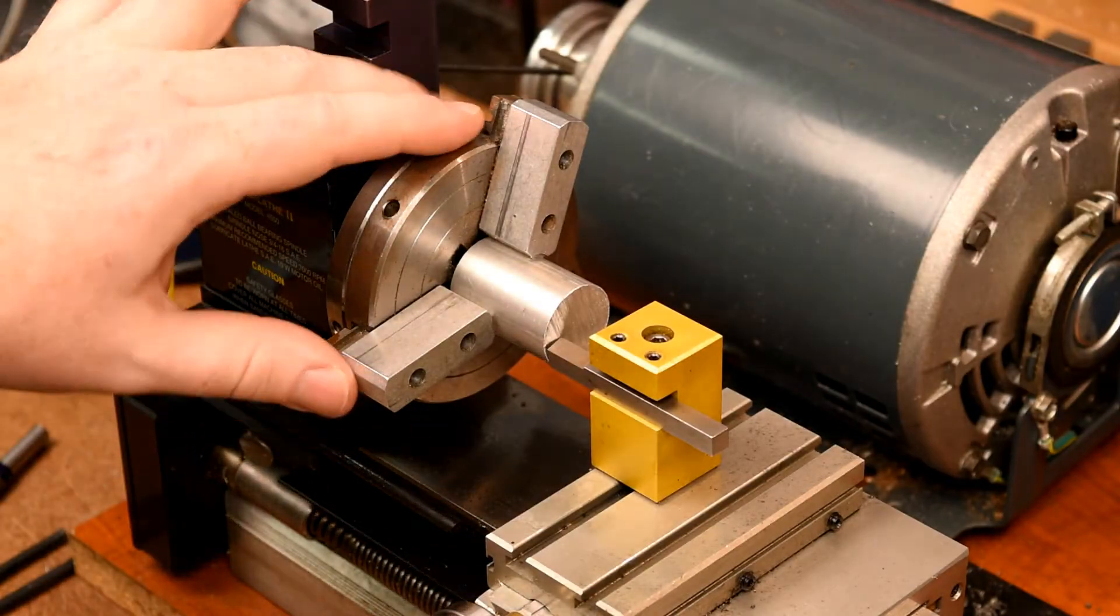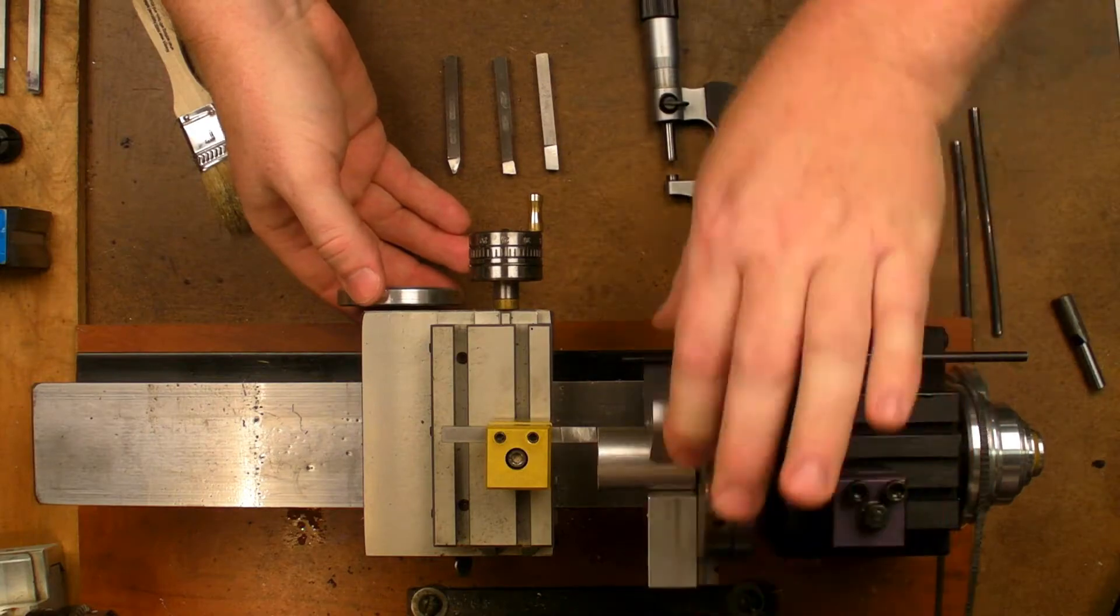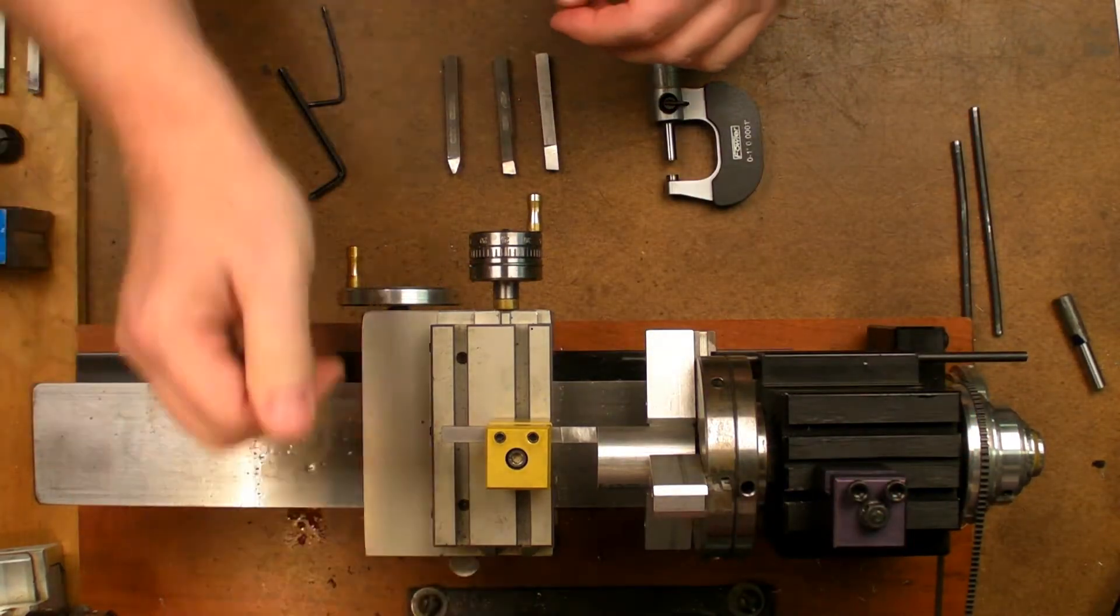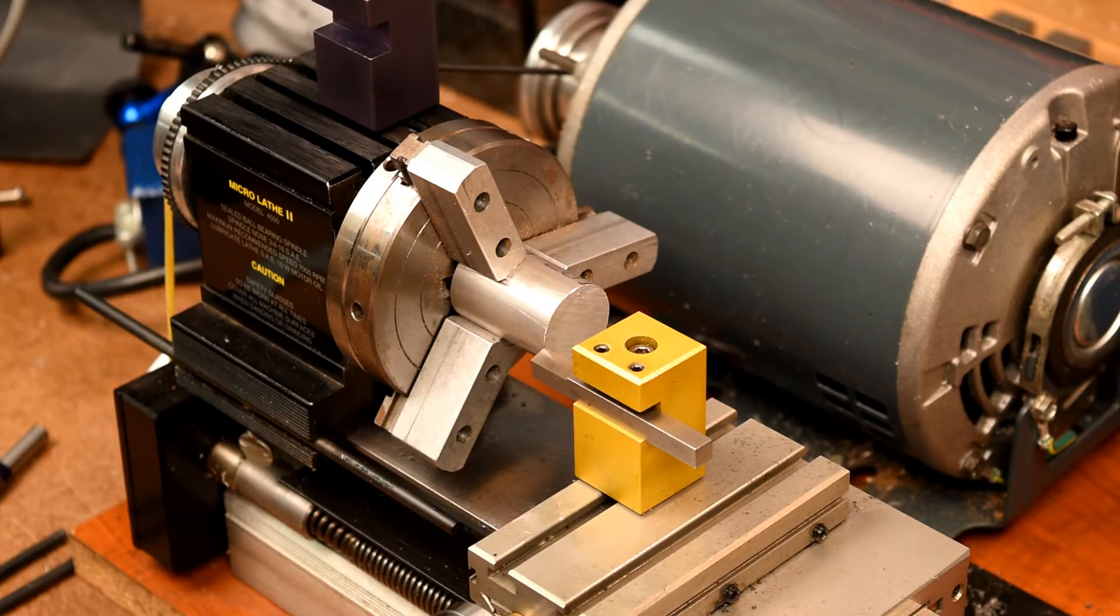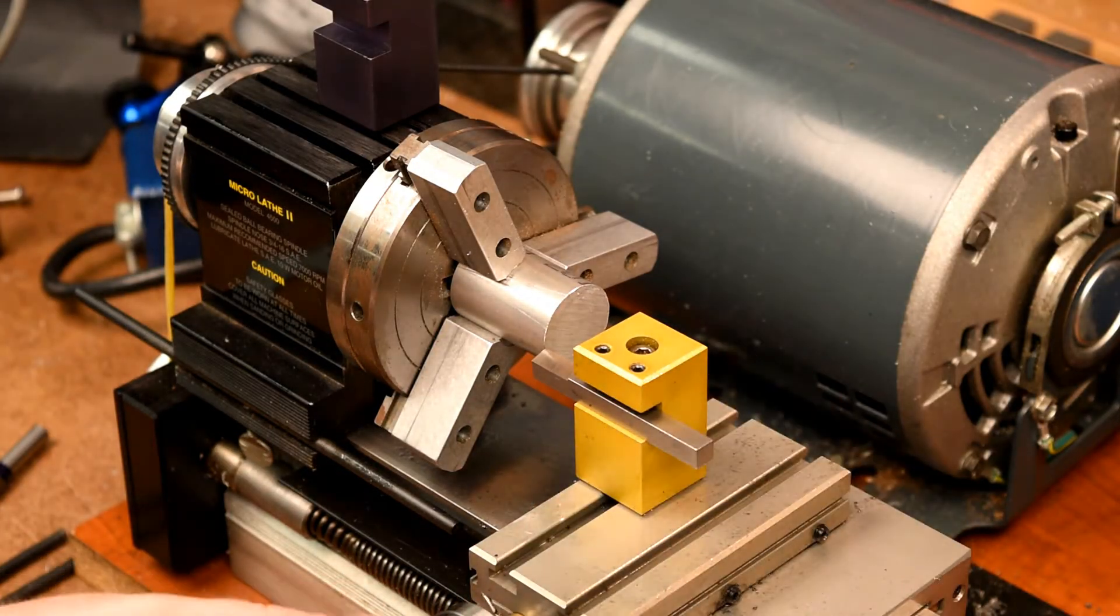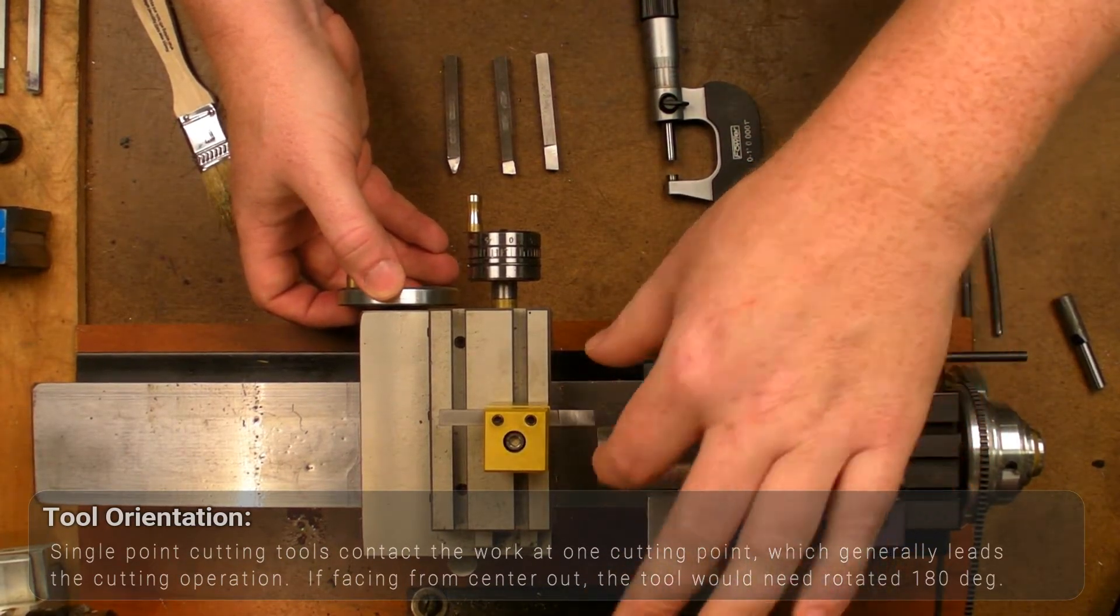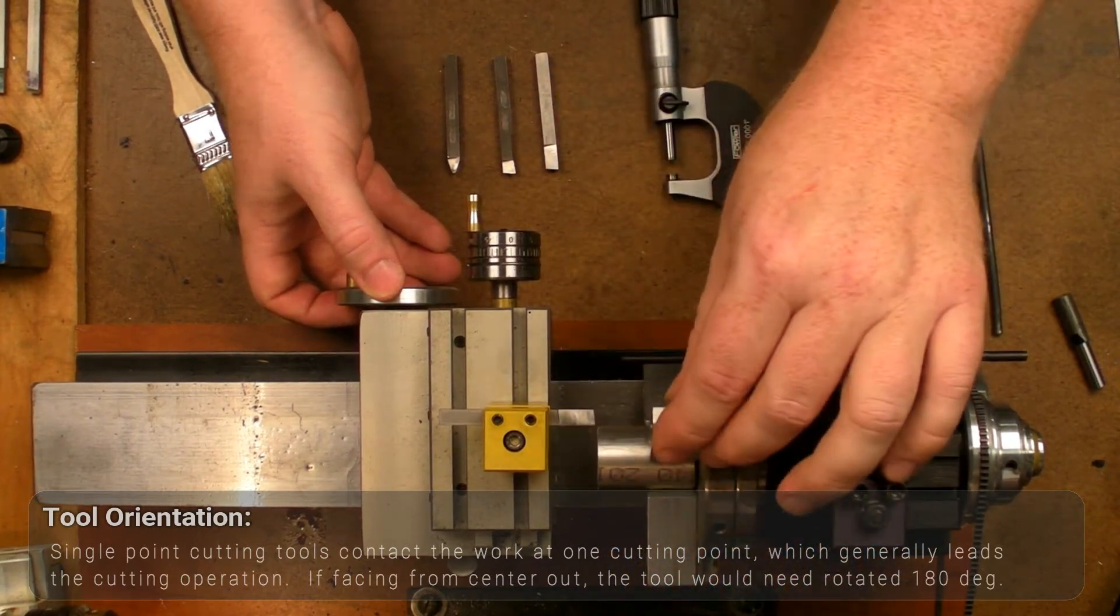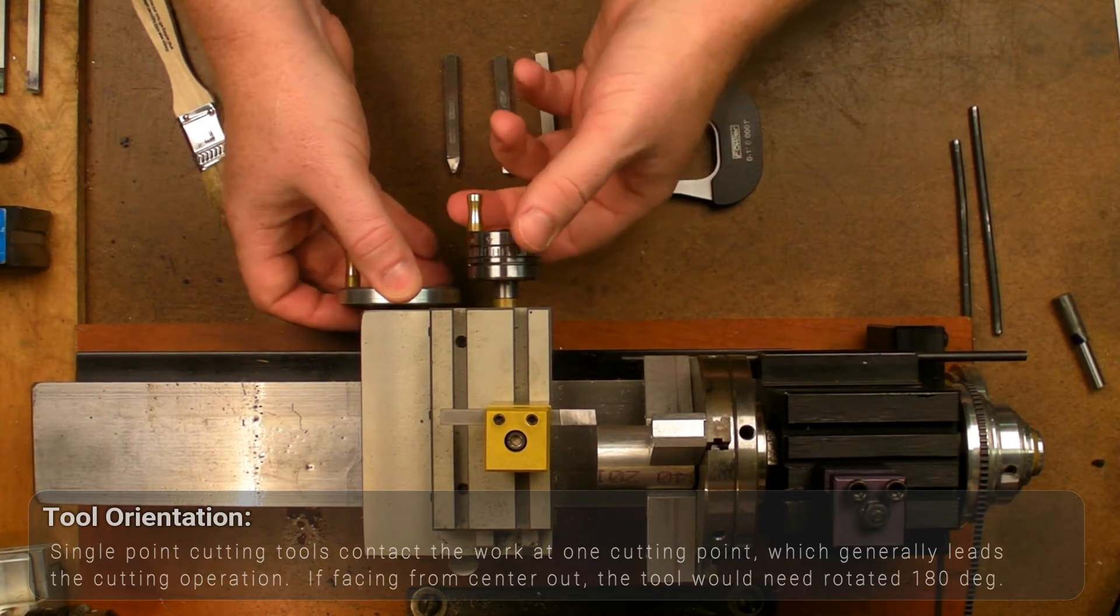Okay, so I've set up the one-inch bar stock in the three-jaw chuck, and this first cut is going to be a facing cut. I've got a left-hand tool located in the tool post, and I'm going to machine from outside to inside. You can do the opposite. In fact, I think that's recommended. But not knowing where the center is exactly at this point, we'll do it this way.